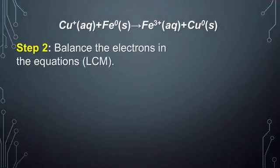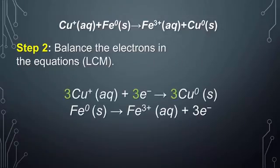The second part is we have to now balance out the equation. We have to use the least common multiple. When we look at our problem, you should have now three copper ions and three electrons, and they make three moles of neutral copper.